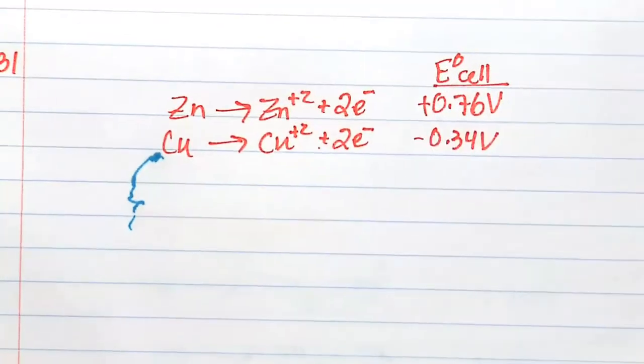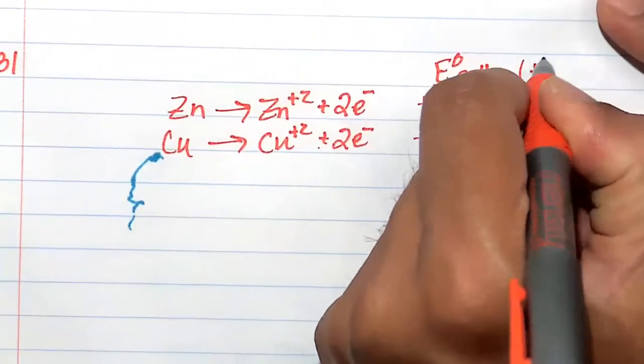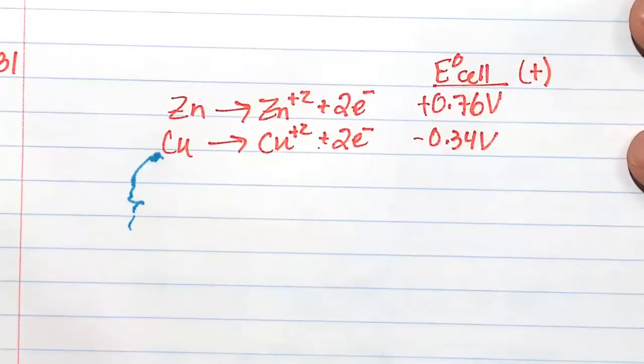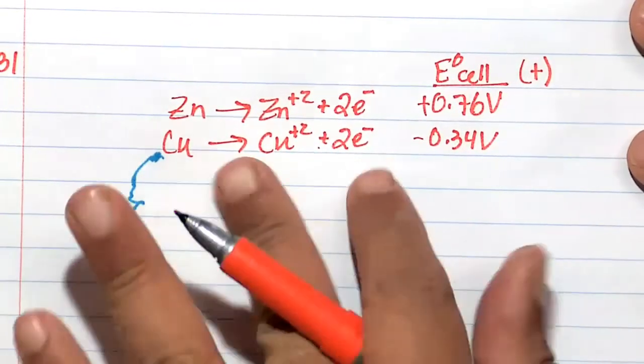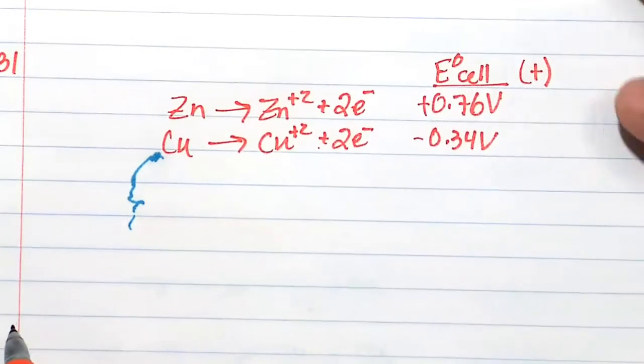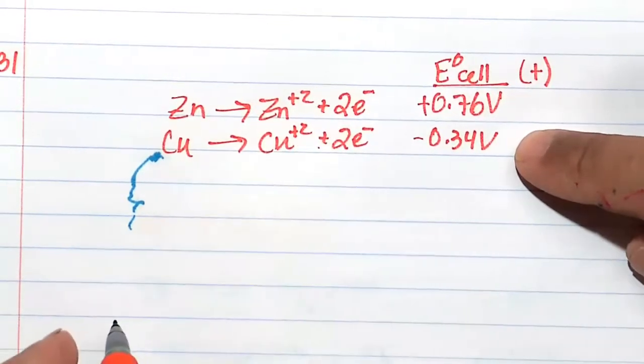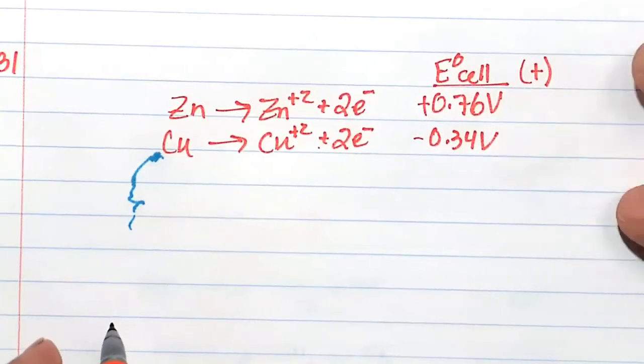To have a successful battery or electrochemical cell, this has to be positive in value. We cannot have negative voltage—that's essentially a dead battery. We have to reverse one to maintain positivity. If you flip this half reaction to make it a reduction half reaction, you'll still get positive voltage.